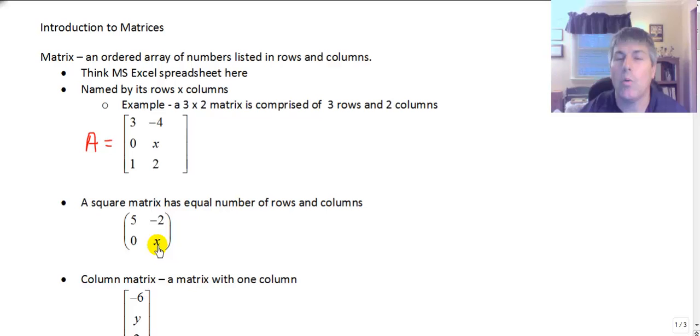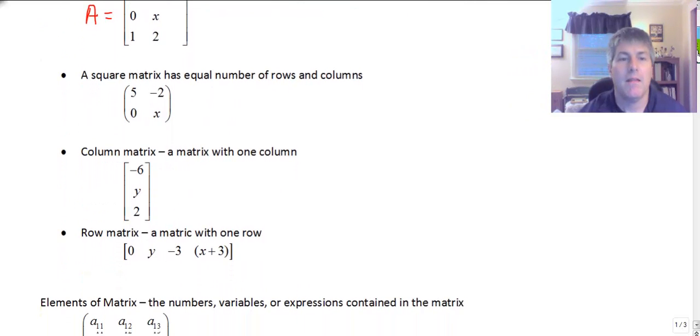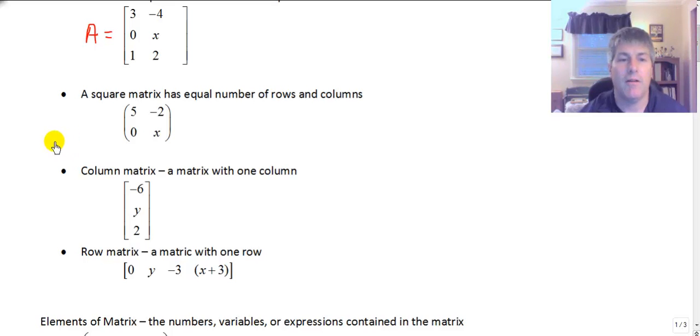Yeah a matrix doesn't always have to have numbers as elements and we'll talk about that in just a minute. Here's an example of a column matrix. It's a matrix with one column and here's another example of a row matrix and it has one row and this matrix has one, two, three, four items in its matrix.